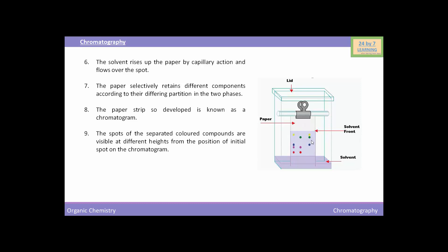The spots of the separated colored compounds are visible at different heights from the position of initial spot on the chromatogram. And the spots of the separated colorless compounds may be observed either under ultraviolet light or by the use of an appropriate spray reagent as discussed under thin layer chromatography.